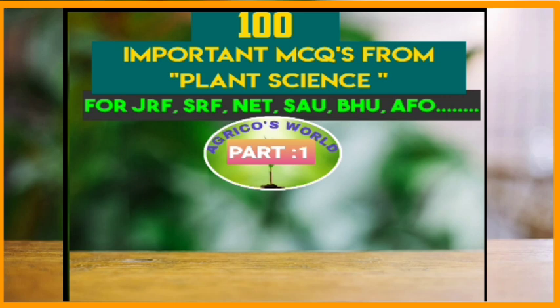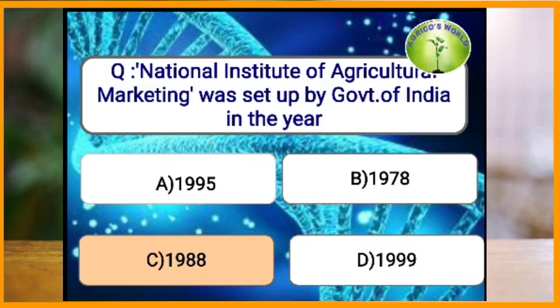National Institute of Agricultural Marketing, that is NIAM, was set up by the Government of India in which year? The National Institute of Agricultural Marketing was established in the year 1988, on 8th August, in Jaipur.